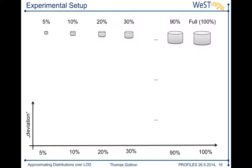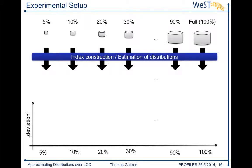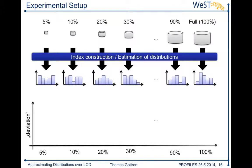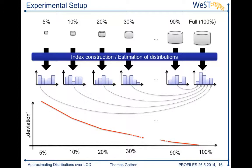To explain how the plots will look: we have the full dataset at 100% and then samples going down — 90%, 30%, 20%, 10%, 5%. I use all these samples across multiple iterations to construct indices and estimate distributions. I then apply different smoothing techniques and compare each sample's distribution against the full distribution using KL divergence. The smaller the sample size, the higher the deviation — the higher the KL divergence — producing a curve that rises as sample size decreases.